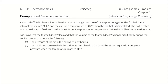A football official inflates a football to the required gauge pressure of 13 PSI prior to a game. The football has an internal volume of 160 cubic inches, and the air is at a temperature of 75 degrees Fahrenheit when the football is first inflated. The ball is taken onto a cold playing field, and by the time it is put into play, the air temperature inside the ball has decreased to 30 degrees Fahrenheit.